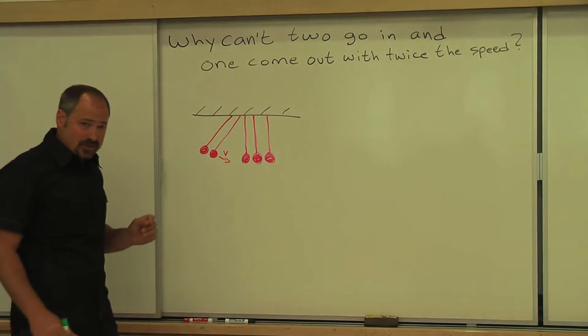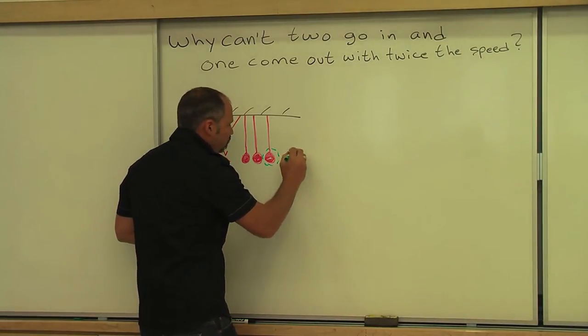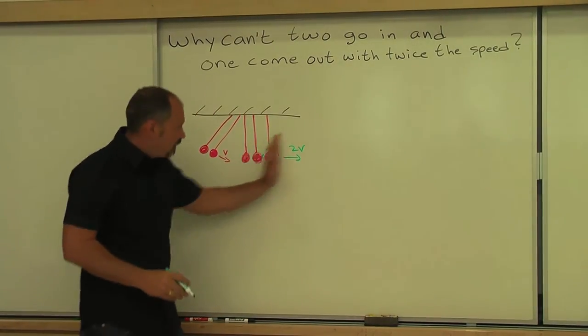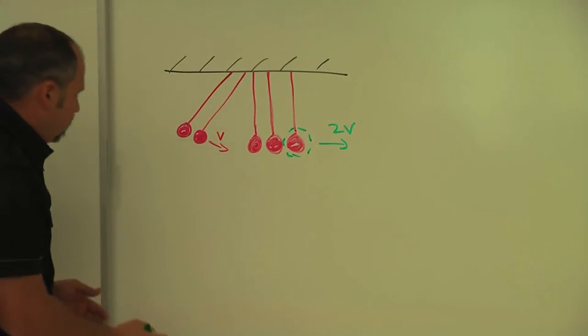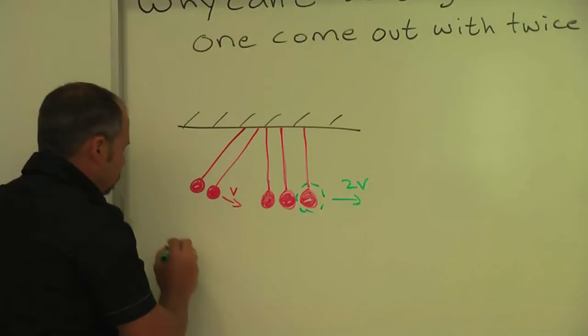The question is, why can't just one come out, but with twice the speed? I mean, what we saw was two coming out with the same speed, clearly momentum is conserved. But why can't you have one come out with twice the speed? That should work as well.